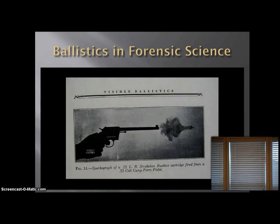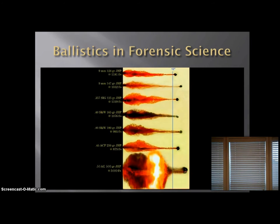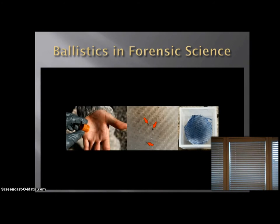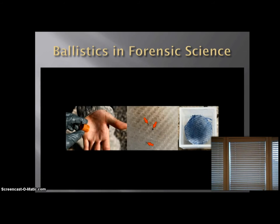The powder residue produced can form many different patterns depending on the gun and ammunition. Examiners usually fire the suspected weapon to create test patterns, which can then be compared to the patterns of the residue found on the victim. It is also helpful if examiners can determine that someone has fired a gun by testing for the presence of primer and powder residue, particularly on the suspected shooter's hands.